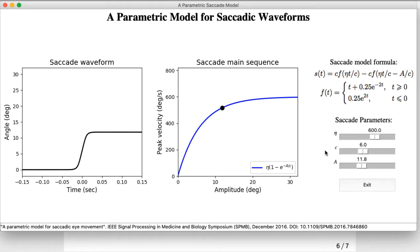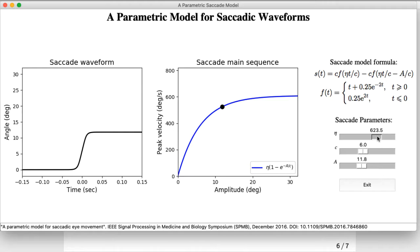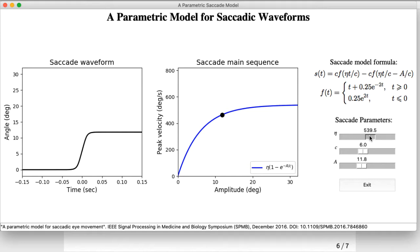For example, if we modify eta, we can see that the main sequence changes. This is for an individual whose saccades are slower — the peak velocity is less. We can see that the saccade waveform has a more gradual transition as the eye moves. As we vary eta, the slope of this part of the saccade waveform changes, and the saturation of the main sequence changes.